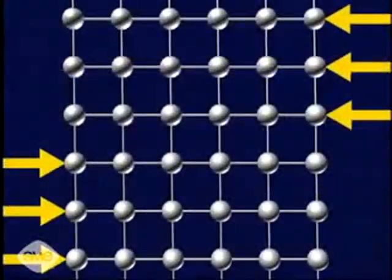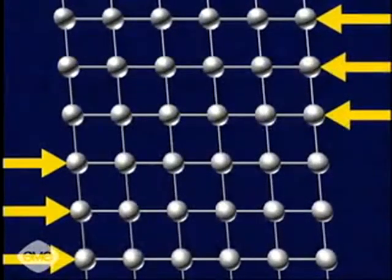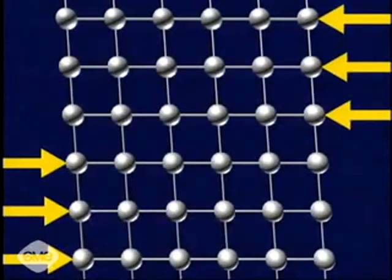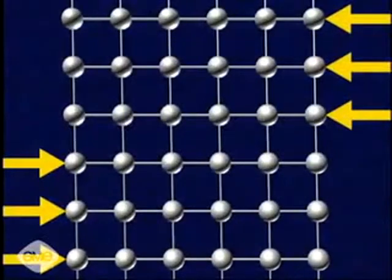If a force or load is applied to a metal, these electromagnetic bonds stretch, allowing the atoms to move slightly. When the load is removed, the bonds pull the atoms back into position.